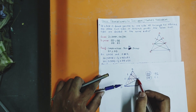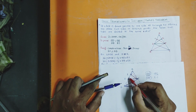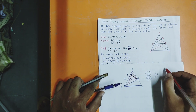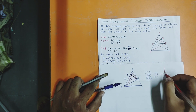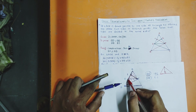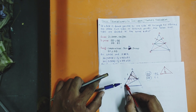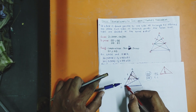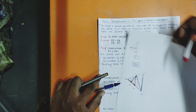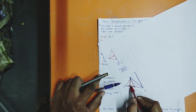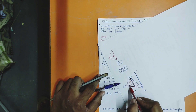For the top triangle ADE: area = half into AD into EF, where EF is the height. For the bottom triangle DBE: area = half into DB into EF. Height must always be perpendicular — EF is the height for both triangles. I just inverted and showed that EF is the perpendicular height for the bottom triangle too.